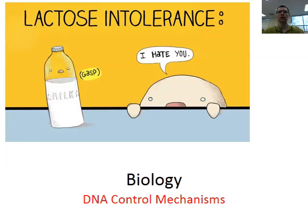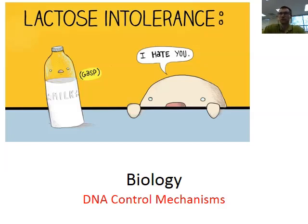Welcome to DNA control mechanisms. The traits that we have are the result of expression of our DNA, and sometimes this expression is necessary or it might be turned off. Different traits might help organisms survive in their environment. For example, infant mammals have the ability to break down milk with an enzyme called lactase — a protein that is expressed from our DNA.